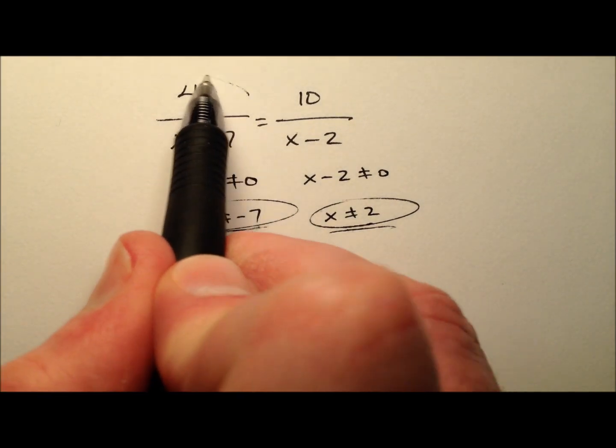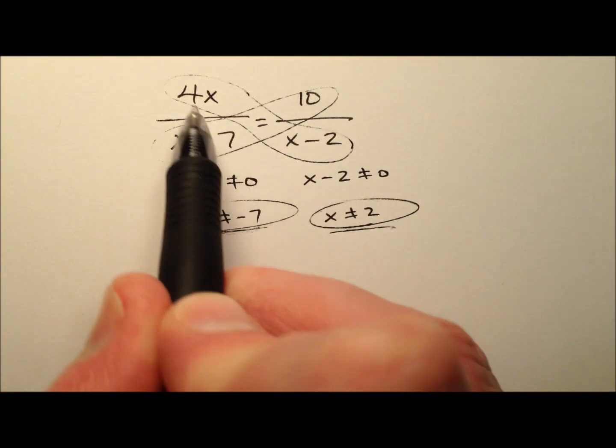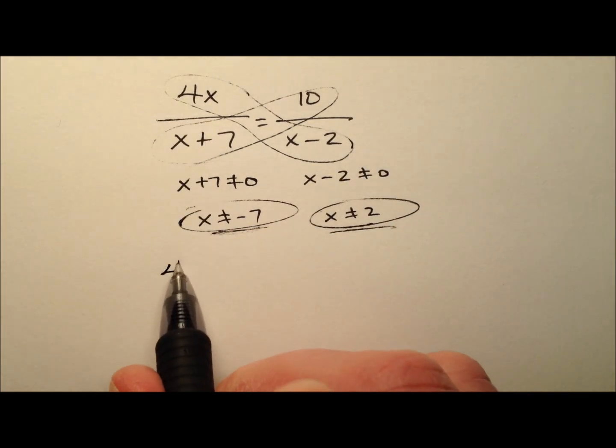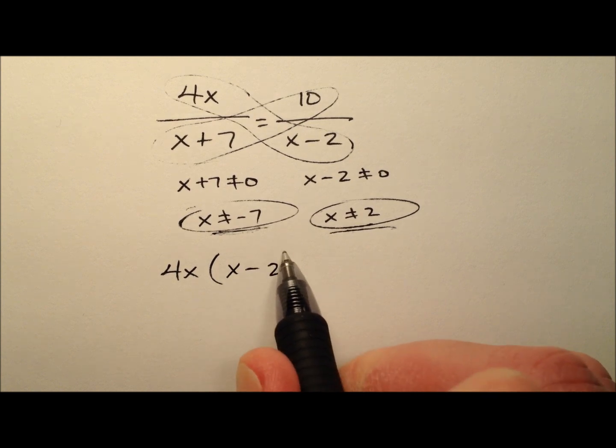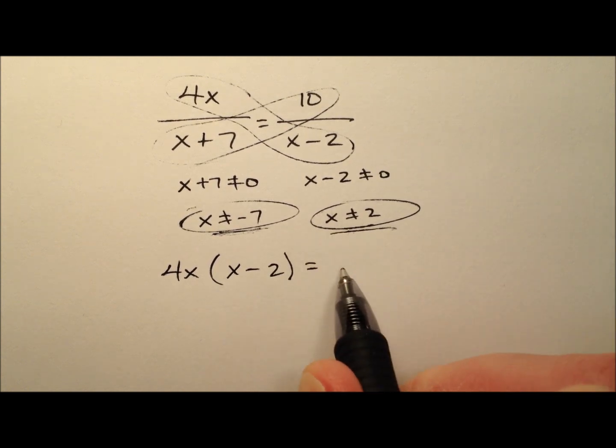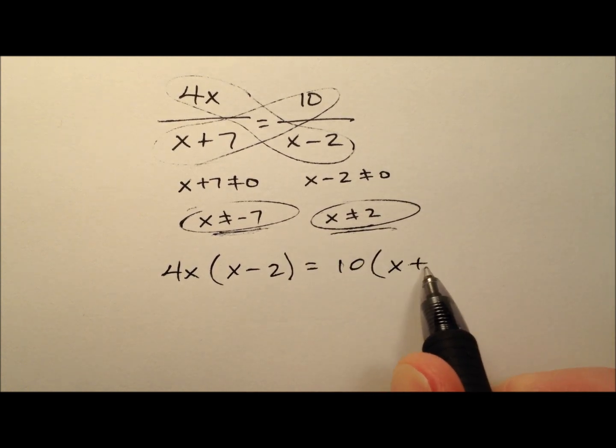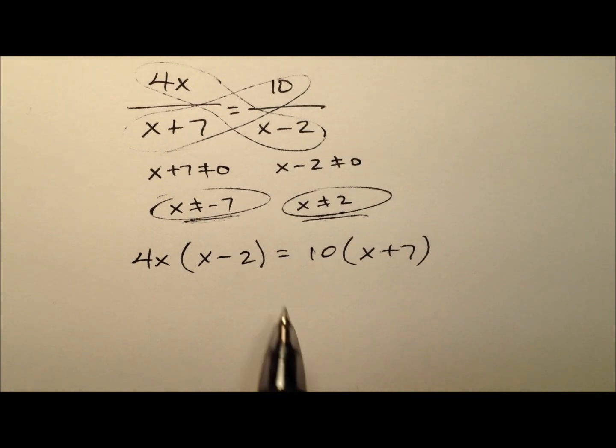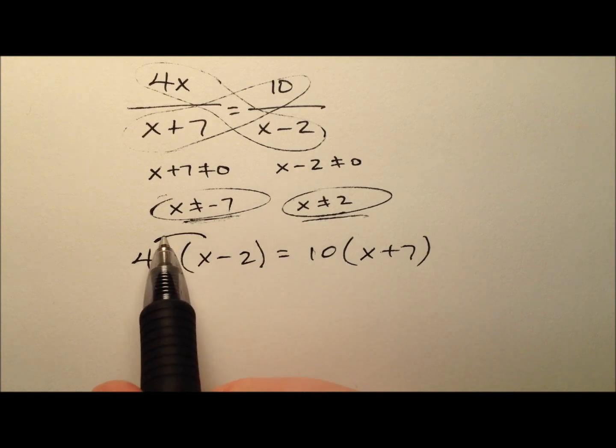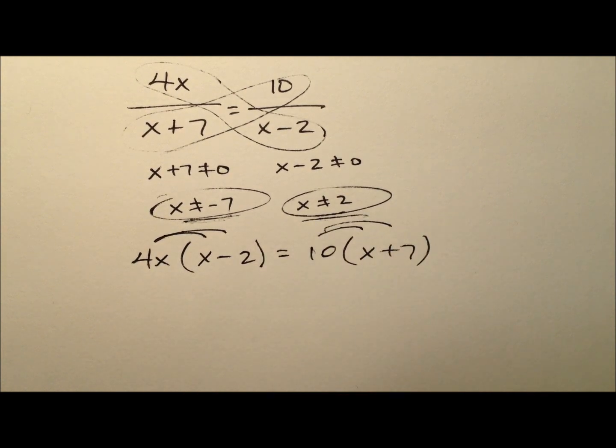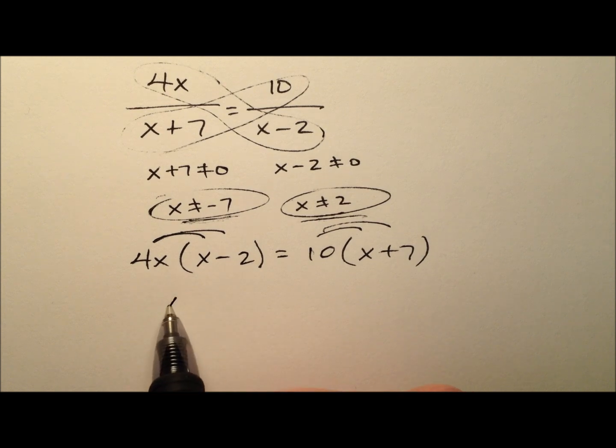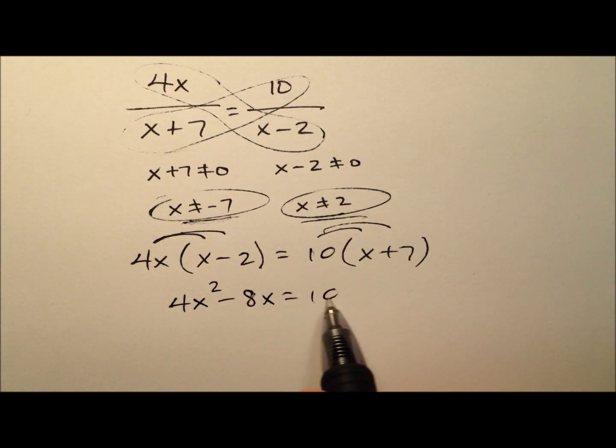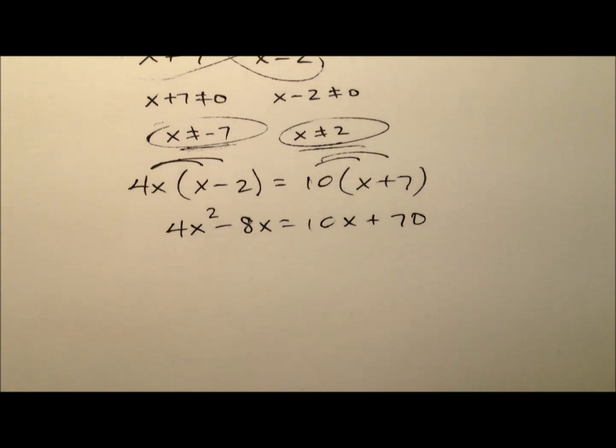So let's go ahead and do these cross products. We know the cross products are going to be equal to each other. So we'll take this 4x and multiply it by the x minus 2 and set that equal to 10 times the binomial there, x plus 7. So we have our equations. Let's go ahead and start by getting rid of these parentheses by distributing. So it looks like 4x squared minus 8x will equal 10x plus 70.